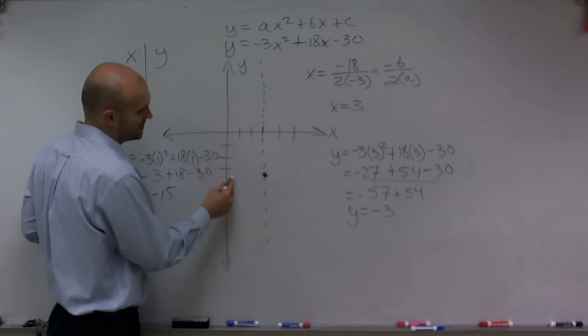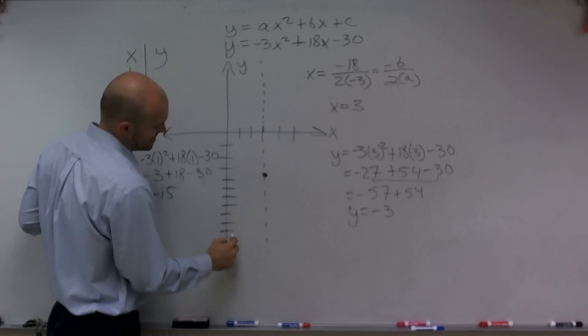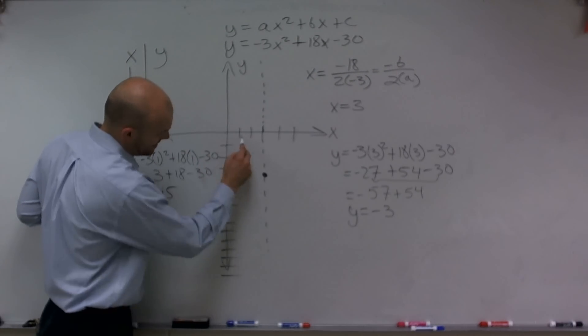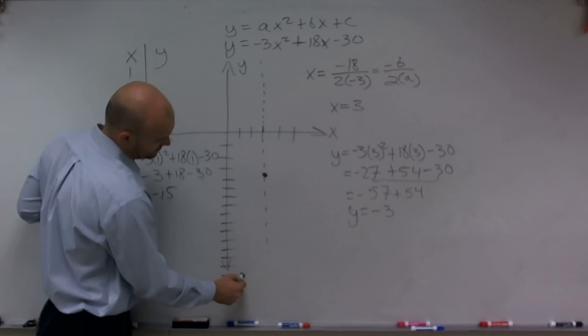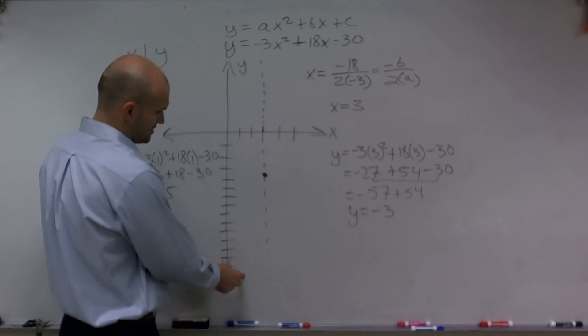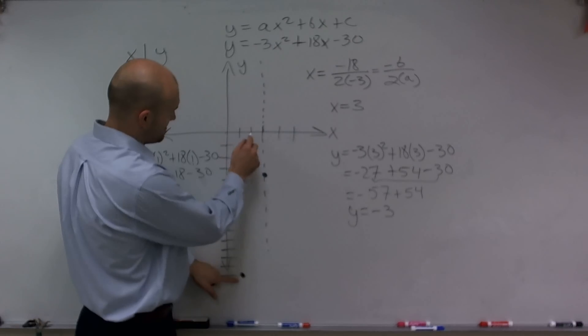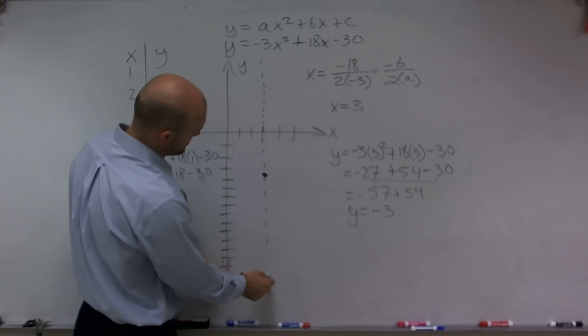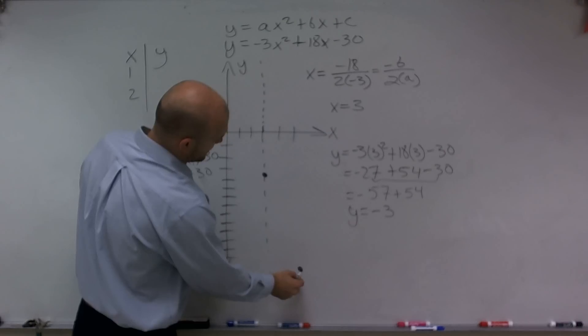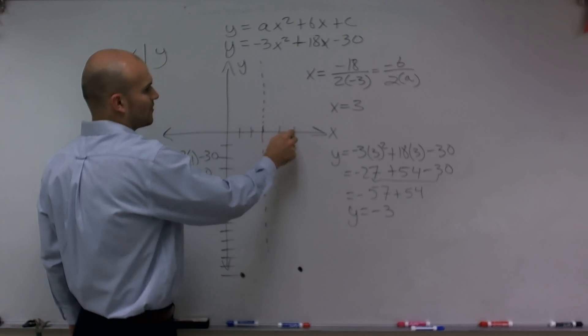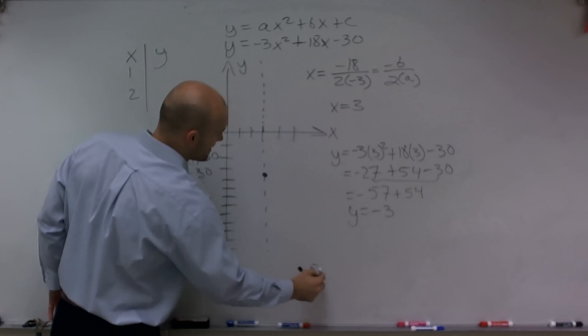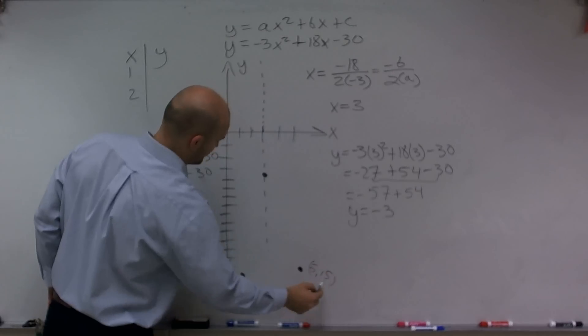So y equals negative 15. Counting down the axis to 15. So when x equals 1, y equals negative 15. I can notice that my distance is over 2 there, so I'm going to go over 2 here. So when x equals 5, I also get negative 15.